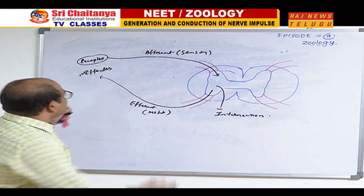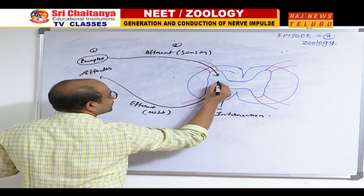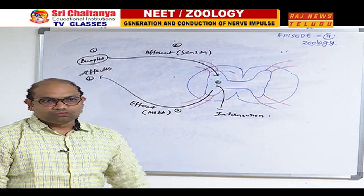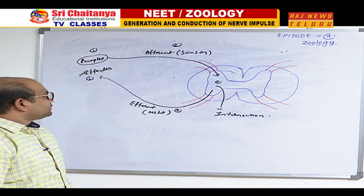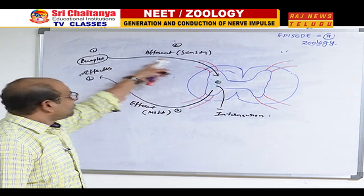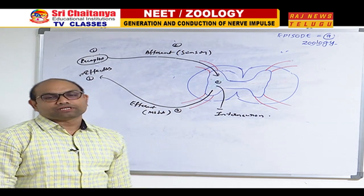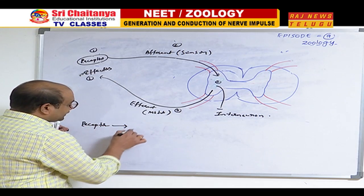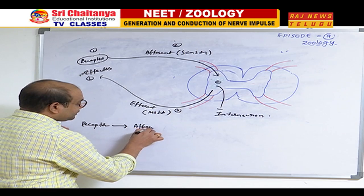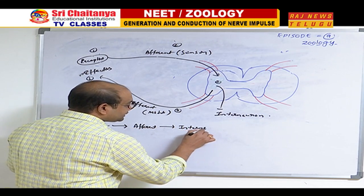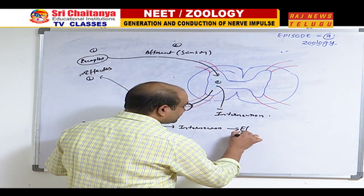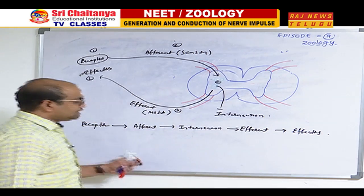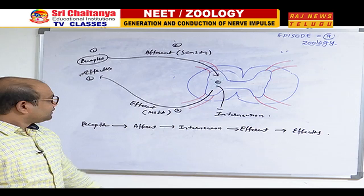Afferent is also called sensory nerve; efferent is also called motor nerve. The parts of a reflex arc are: receptors, afferent nerve, interneuron, efferent nerve, and effectors — together called the reflex arc. The sequence of the reflex arc is: first, receptor; then afferent pathway; then interneuron if present; then efferent pathway; and finally effectors.